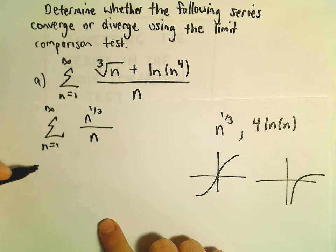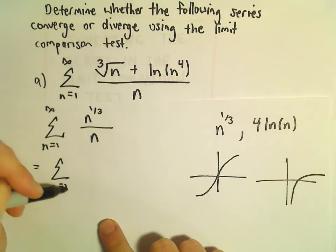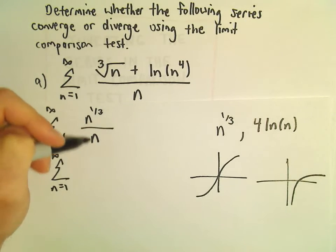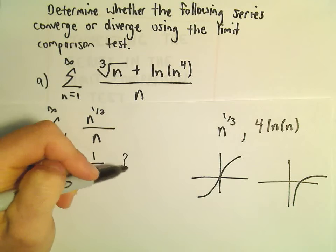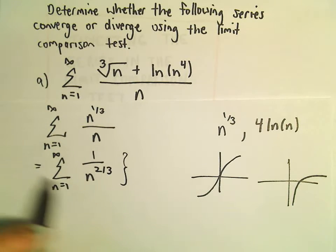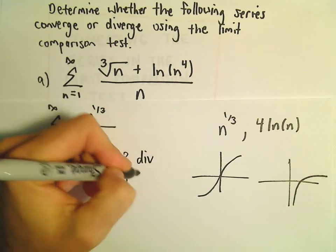So I'm going to compare, well let's reduce this a little bit. n to the 1/3 over n is going to be n to the -2/3. And hey, now at least, you know, I know what happens with this series. This is a divergent p-series.